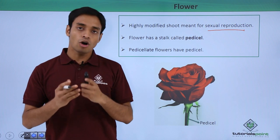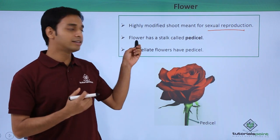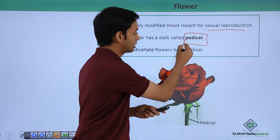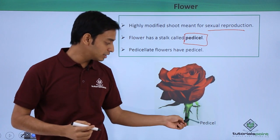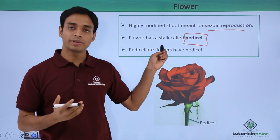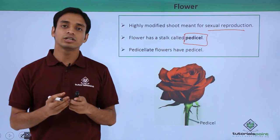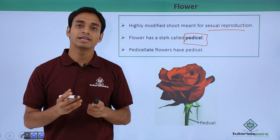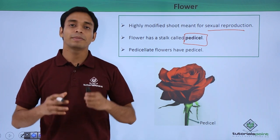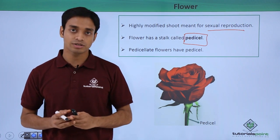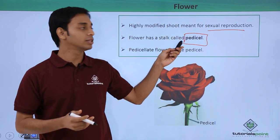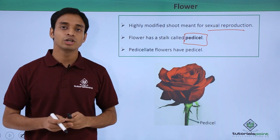All flowers are held by a stalk which is known as the pedicel. As you can see in this picture, this is the pedicel — it is holding the flower. The function of the pedicel is to position a flower in such a way that it can help in the process of pollination by attracting pollinating agents.